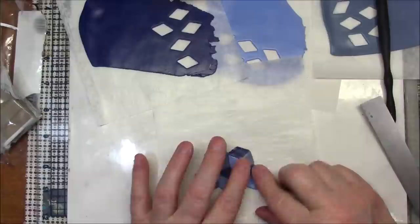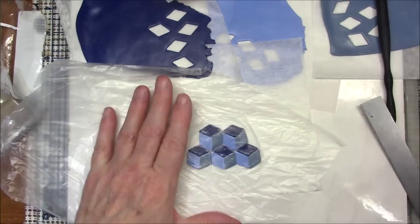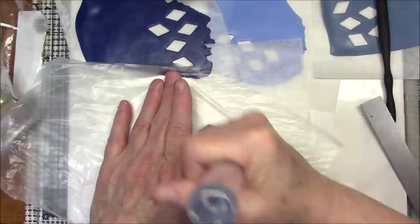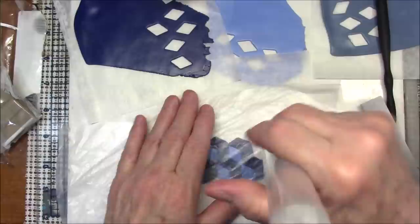Then I would take a piece of deli wrap or wax paper or whatever and I would burnish with my fingers, or you could take the end of your roller and just burnish. Just remember to pick this up every once in a while so you don't get wrinkles.